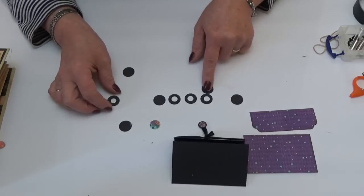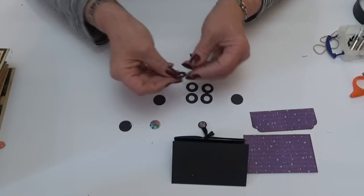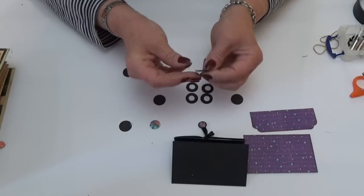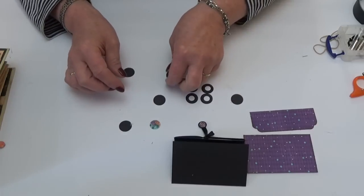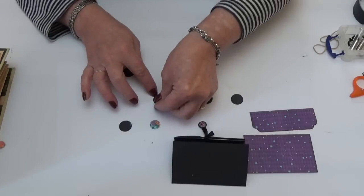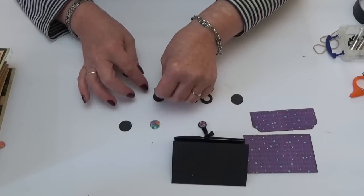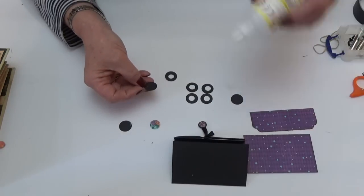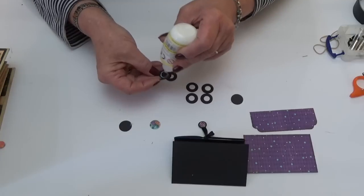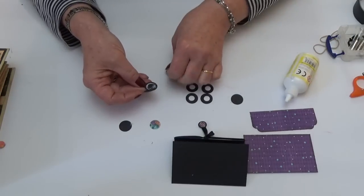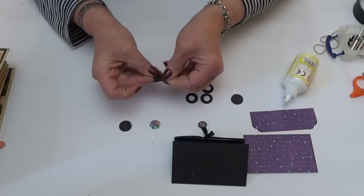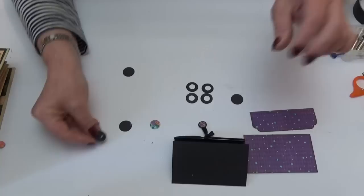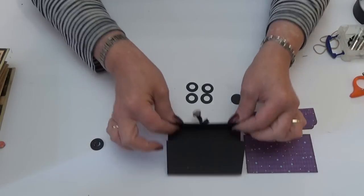And what you do is stick the four washers together so that you get a thick washer, and you stick that onto one black circle like that, and just leave that to dry.